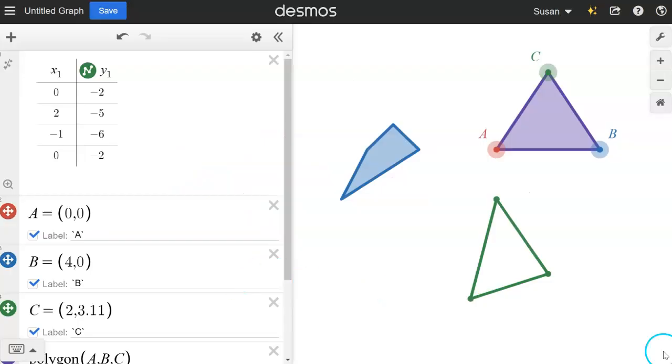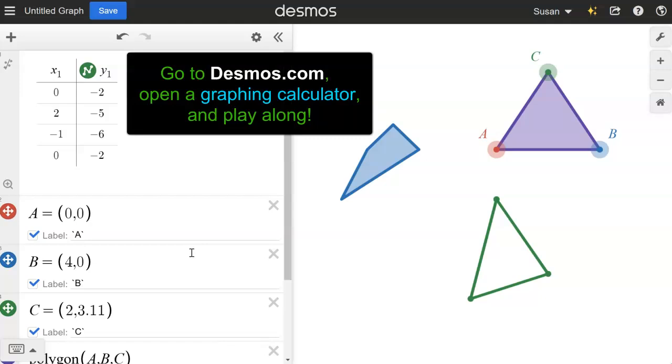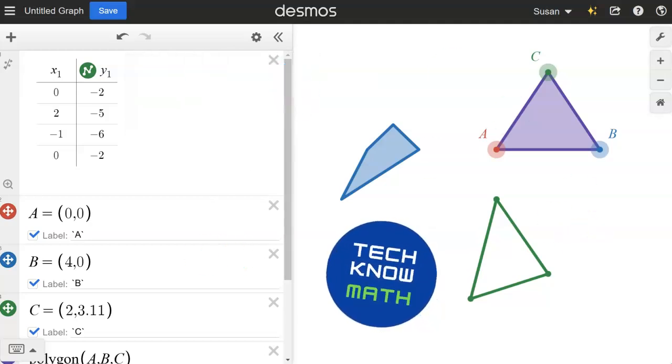So that's all I have for this really short video. Check it out. If you've never played with polygons in the Desmos graphing calculator, go in there today and see what you can create. I've created a triangle, a quadrilateral, and another triangle, but you can create hexagons and pentagons and all kinds of cool graphics. Check it out. Y'all have a great day.